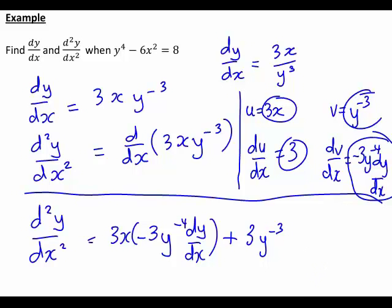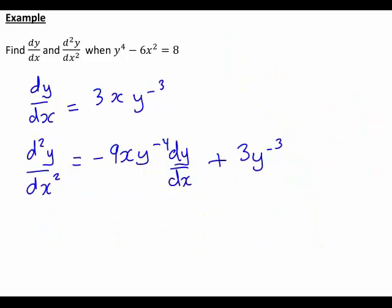Then v times du dx is just going to be 3y to the negative 3. That's going to be the initial form in which we could write this second derivative. And I've just rewritten it here again, just slightly simplified, just with the 3 times negative 3 of the first term simplified to give negative 9.